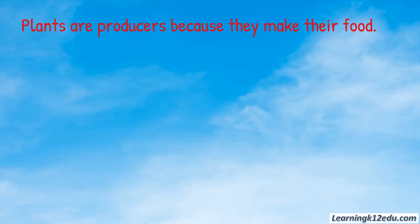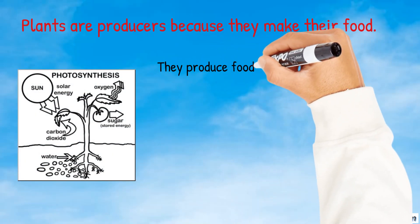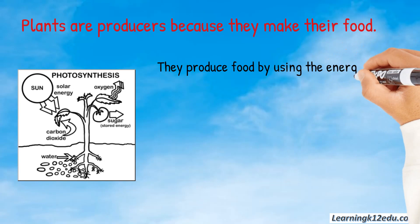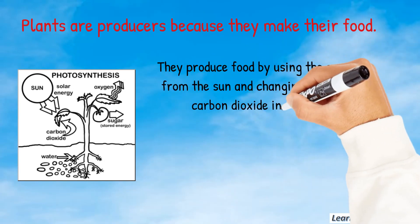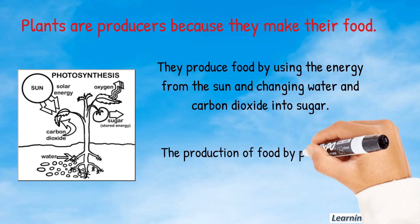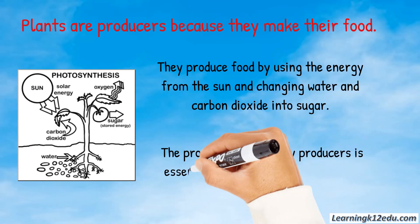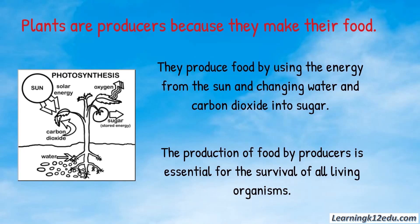Plants are producers because they make their own food. They produce food by using the energy from the sun and changing water and carbon dioxide into sugar. The production of food by producers is essential for the survival of all living organisms.